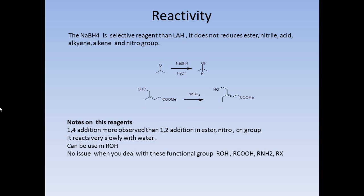1,4-addition is more observed than 1,2-addition in ester and nitro groups. In the first example, a ketone is converted into an alcohol — no issue there. Here we have an aldehyde and ester, but it is not conjugated — there is a CH2 here, so no conjugation between the double bond and the reactive groups. Sodium borohydride leaves this double bond alone. If it were in conjugation, it can reduce via 1,4-addition, then go 1,2-addition to give the fully saturated alcohol.